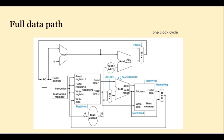Here we see the full data path, showing the control signals coming out in blue. In this first design, each instruction executes in one long clock cycle. We're assuming a reduced instruction set just for illustration purposes: a few R-type instructions, only load word and store word, and only one branch — branch equal. However, if you understand how these instructions are executed, you will understand all of the instructions.